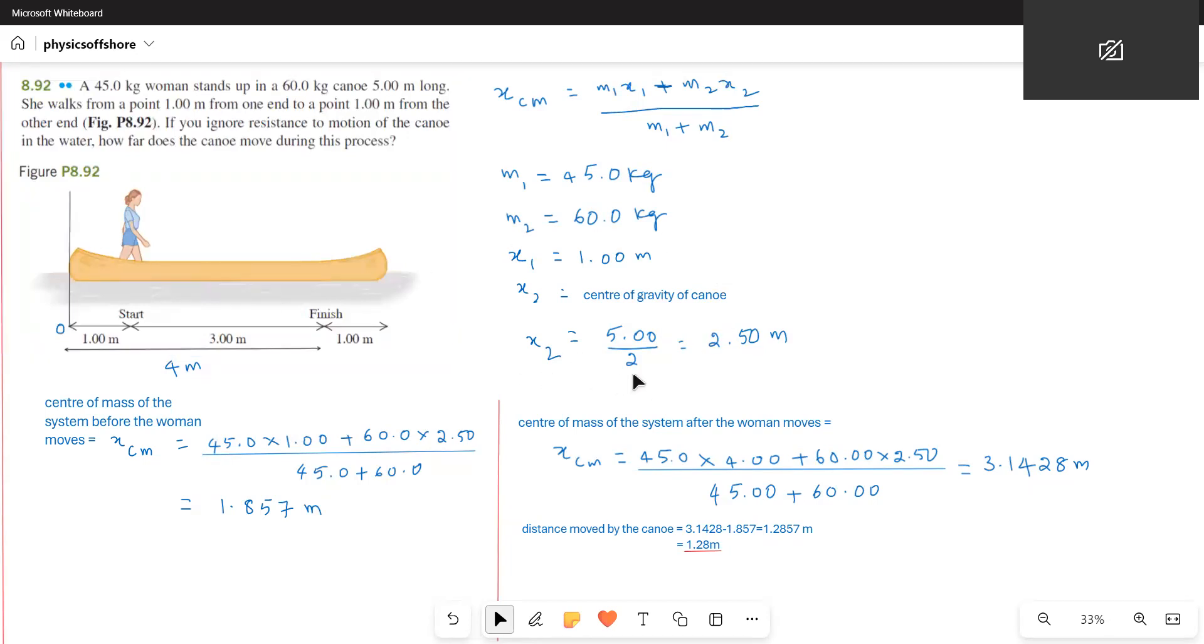The center of mass of the system before the woman moves: her mass is 45 and she is at a distance of 1 meter from the origin. Therefore, 45 times 1 plus the mass of the canoe is 60 and its center of gravity is 2.5. So 45 times 1 plus 60 times 2.5 divided by m1 plus m2 gives a value of 1.857 meters.